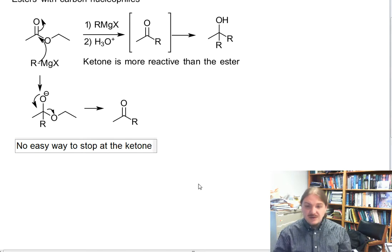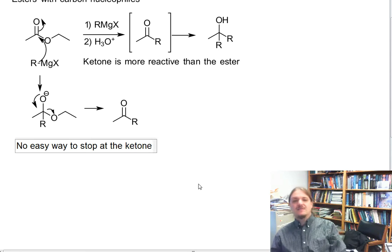In the previous video, I shared that there is a sneaky way to stop at the aldehyde when doing a reduction of an ester. But that's because that reducing agent is initially electrophilic. And esters are better nucleophiles than ketones.